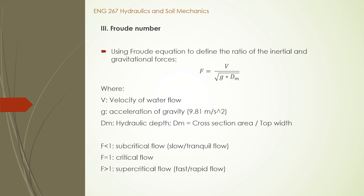The Froude equation can be used to determine the type of flow. It includes the velocity of water flow, the acceleration of gravity, and the hydraulic depth. If the Froude number is greater than one, the flow is supercritical — fast or rapid flow. Equal to one for critical flow, and smaller than one for subcritical flow.